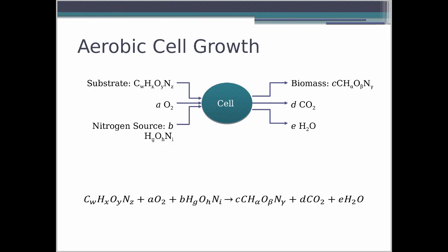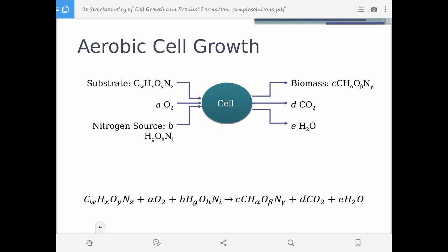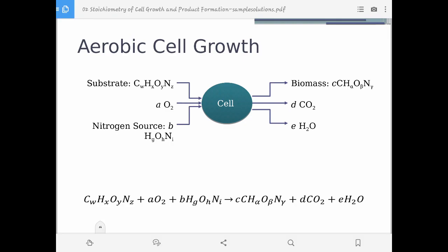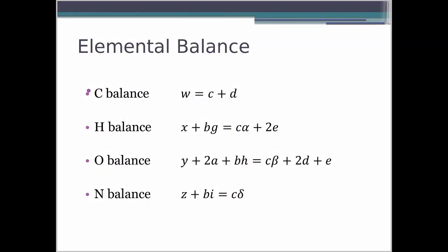The cell intakes substrate, and if it's an aerobic culture, you have oxygen and also the nitrogen sources, and then processes them to form other cells, which are your biomass, carbon dioxide, and water. The general simplified chemical reaction in this process can be obtained in this equation. You have C_W H_X O_Y N_Z as your carbon source, and A·O₂ where A is the stoichiometric coefficient for oxygen, and H_G O H N₁ as your nitrogen source, and then you have your biomass, carbon dioxide, and water. We need to do an elemental balance here since this is a process with reaction.